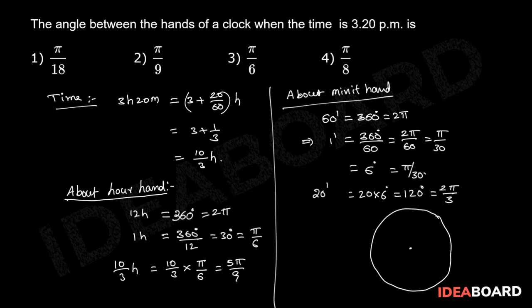The initial ray is at 12 o'clock, this is 3 o'clock, and 4 o'clock. At 3 hours 20 minutes, the hour hand makes an angle of 100 degrees with the initial ray. At 20 minutes, the minute hand makes an angle of 120 degrees with the initial ray.